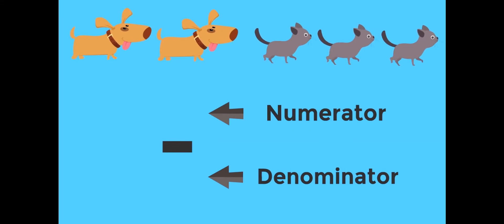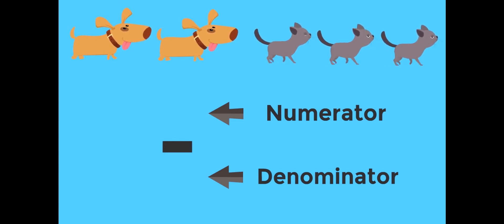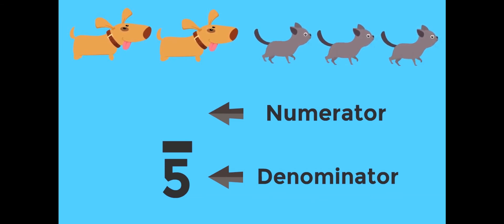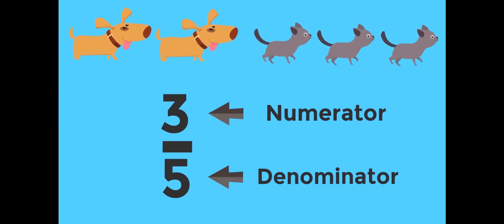Here's what a fraction looks like: a line in the middle with the top number being the numerator and the bottom number being the denominator. The total number of pets is five, so five is the denominator — it tells us the total number of pets. We're asking for the fraction of pets that are cats. How many cats are there? Three — so three is the numerator. Three-fifths of the pets are cats.